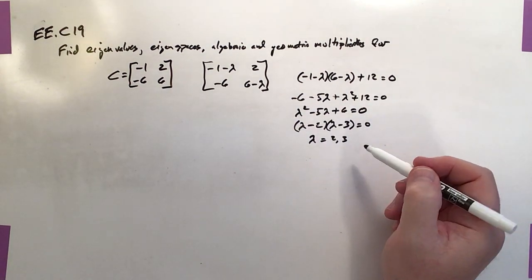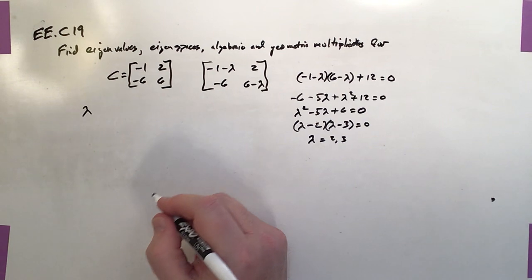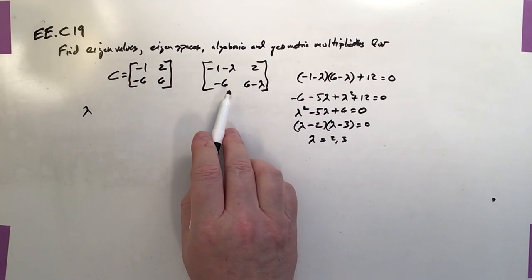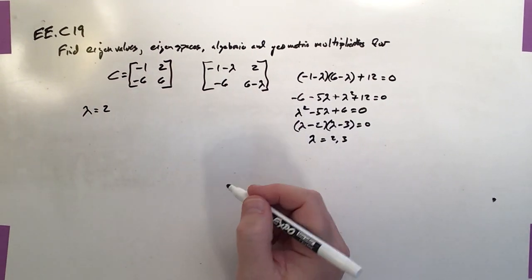So those are the eigenvalues, so we've taken care of the first step. Now, to find the eigenspaces, we want to find the null set of this matrix once we sub in each one of the lambda values. So first, lambda equals 2.